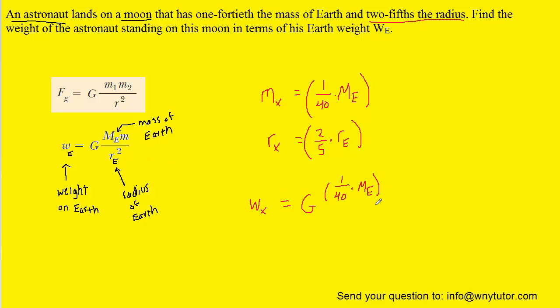We then have the mass of the astronaut himself, so we'll just keep that as m. Then we're going to divide by not the radius of Earth, but the radius of this moon, which is 2/5 times the radius of Earth. Don't forget to square that - that's a very important part of this question. We want to focus on the fractions in the numerator as well as the denominator.